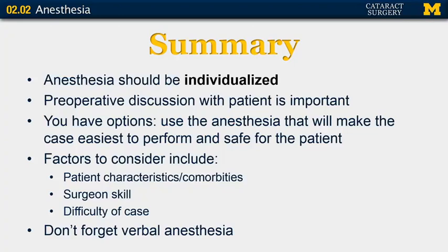In summary, anesthesia should be individualized. A preoperative discussion with the patient is important. Remember, you have options — use the anesthesia that will make the case easiest for you to perform and is also safe for the patient. Factors to consider include patient characteristics and comorbidities, surgeon skill, and difficulty of the case. Don't forget that verbal anesthesia is also quite effective. Thank you for listening in. Hopefully you found this lecture useful, and if you have any questions, we'd love to hear from you.